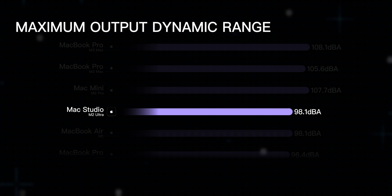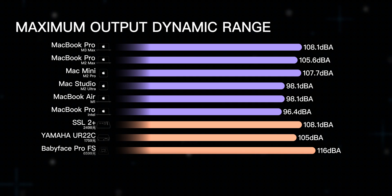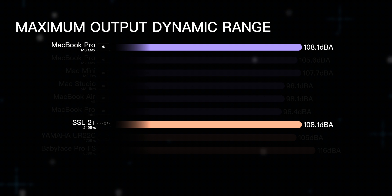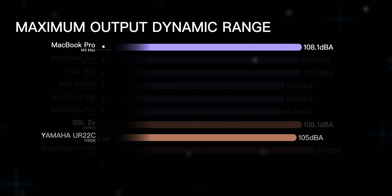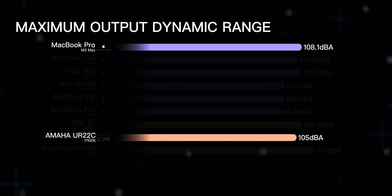At the bottom of the list is the Mac Studio with M2 Ultra core, which is similar to the MacBook Air with the original M1 core. The DA output dynamic range of the built-in sound card achieving such performance is close to, or even beyond, many 1,000 yuan sound cards. The 108.1 dBA of the new MacBook Pro with M3 Max core matches that of the SSL 2 Plus at $349, and even surpasses the Yamaha UR22C at $239 — which is often unexpected.